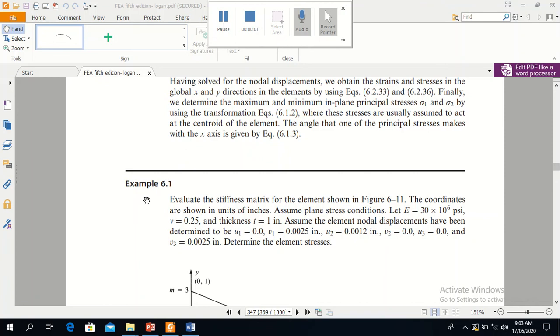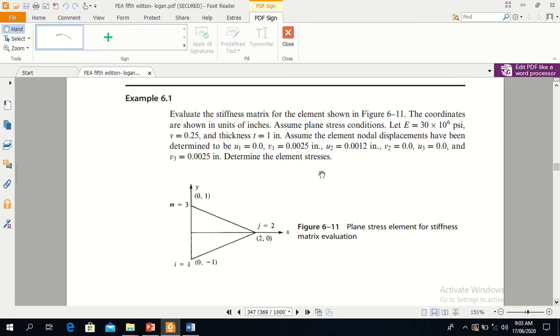Now we start Example 6.1. In this example, you will find out the stiffness matrix for a triangular element which is shown in the figure. This is the triangular element.